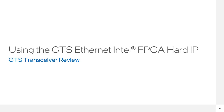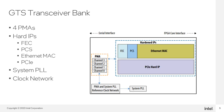The GTS transceiver bank is the main building block of the transceiver. Each bank contains four PMA channels and four hard IPs: FEC, PCS, Ethernet MAC, and PCI-E. The bank also has one system PLL and a reference clock network to provide reference clocks to the system PLL as well as other PMA channel PLLs. The reference clock network spans across multiple banks to allow sharing of clocks.